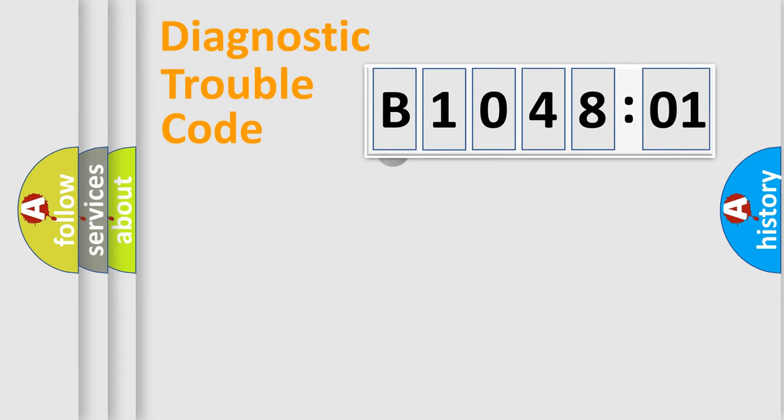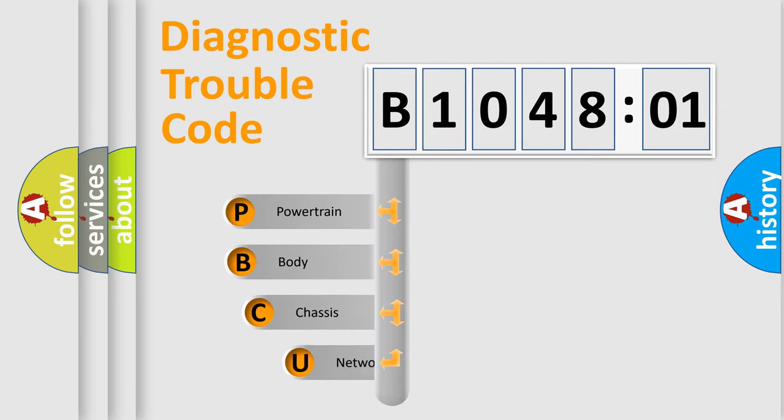First, let's look at the history of diagnostic fault code composition according to the OBD2 protocol, which is unified for all automakers since 2000. We divide the electric system of automobile into four basic units.